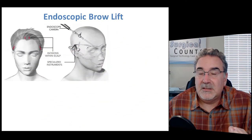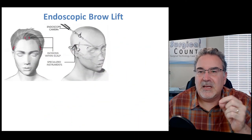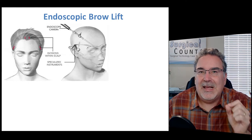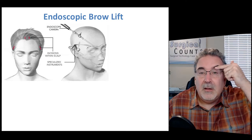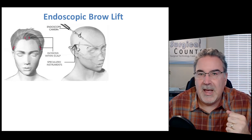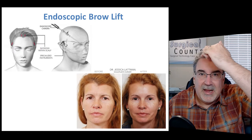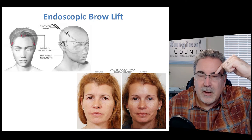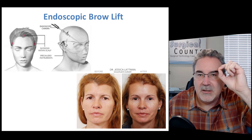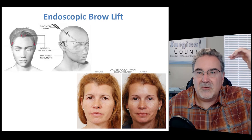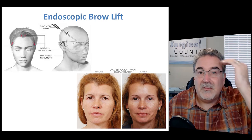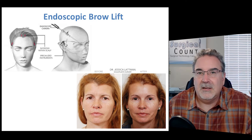Similar to a blepharoplasty but working on the eyebrow — the tissue just above the eyelid — we can do an endoscopic brow lift to lift the eyebrow and the surrounding tissue for a more pleasing appearance. Incisions are made at the hairline, going under the skin of the forehead down to the eyebrow, pulling that skin up and attaching it, then removing instruments so the scar line is up at the hairline where it can't be seen. The eyebrow is lifted, has more curve, and opens the eyes more.